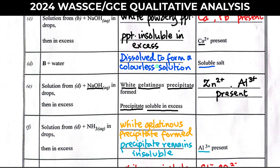The next test: solution from D + aqueous sodium hydroxide in drops, then in excess. The ion present is aluminium, but the inference must not just be aluminium ion alone, because a white gelatinous precipitate that dissolves in excess sodium hydroxide is also given by zinc ion. So our inference here is zinc and aluminium ion — both are present as possibilities.